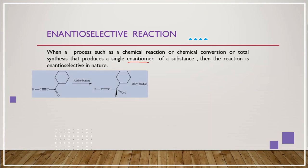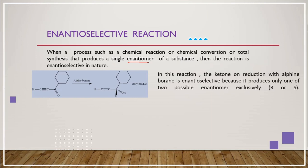In this example, the ketone on reduction with alpine borane is enantioselective because it produces only one of the two possible enantiomers exclusively, which is either R or S.